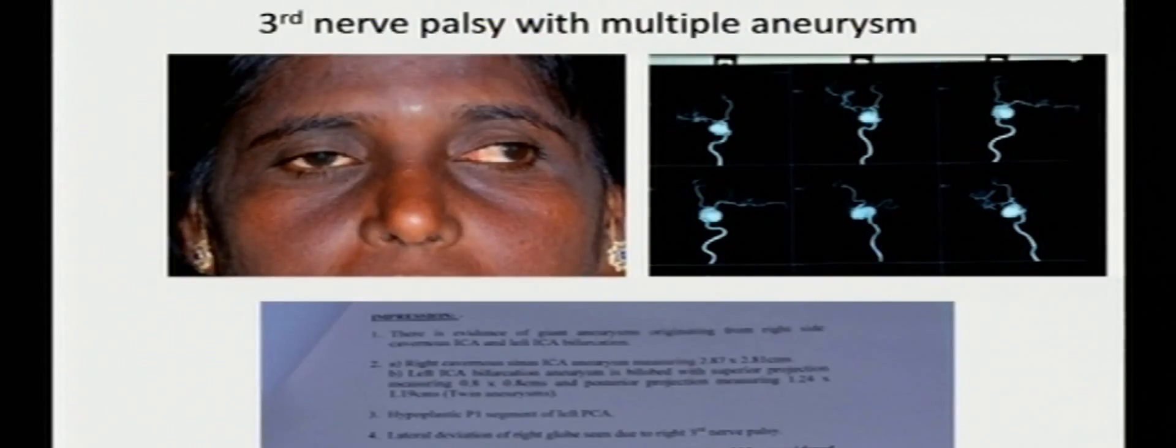This is a third nerve palsy patient with pupil involvement. The MRI along with the MRA has to be done. In any case of third nerve palsy with pupil involvement, MRI has to be done along with MRA which showed multiple ICA aneurysms.